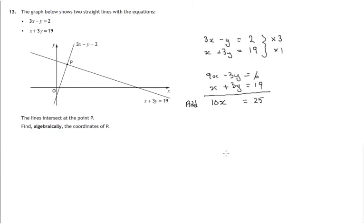19 plus 6. 25. So x, let's divide both sides by 10. It's 25 over 10. That's 5 over 2 as before.